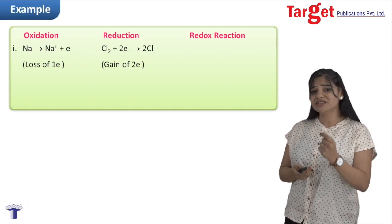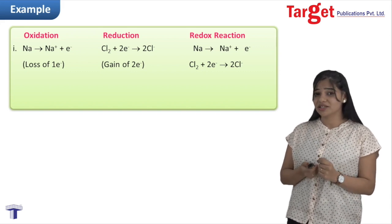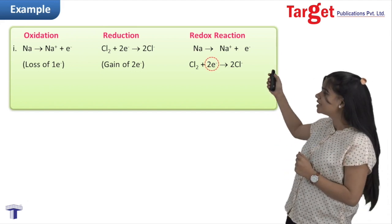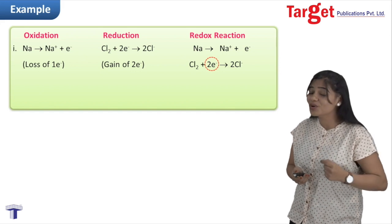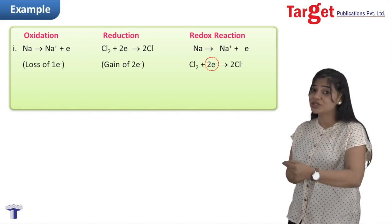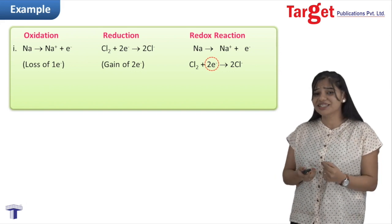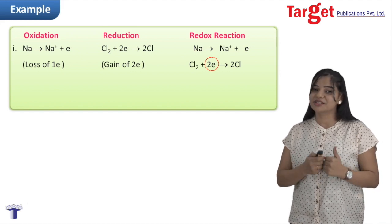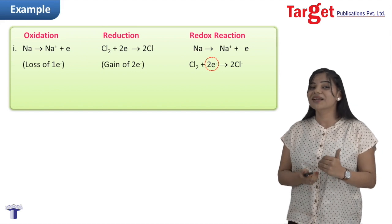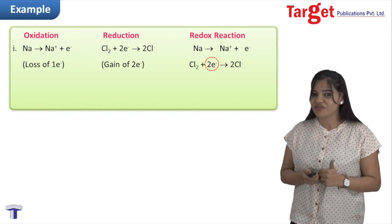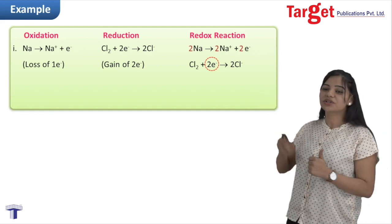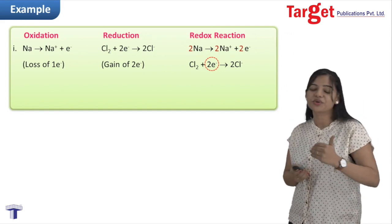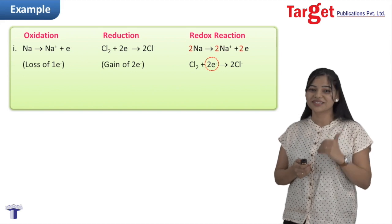Now if we add both the oxidation and reduction reactions, we get a redox reaction. But notice the highlighted portion — chlorine is gaining two electrons whereas sodium is losing only one electron. We have studied that the number of electrons lost must always equal the number of electrons gained. So we multiply the sodium oxidation reaction by two to get a common factor of two electrons, making electrons lost by sodium equal to electrons gained by chlorine.